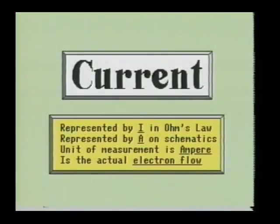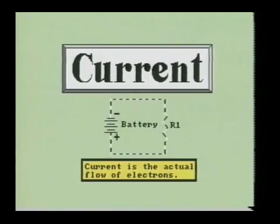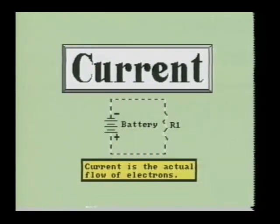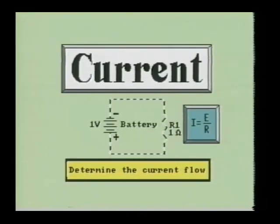The third variable we shall look at is current, represented by the letter I in the Ohm's Law equation. Current is measured in a unit called the ampere, or amp for short. Current is the actual electron flow through the circuit. It is the current which flows through the device which makes the device useful. Ohm's Law gives us the equation E over I times R. If we have a given voltage applied to a fixed resistance, we can calculate for the current by knowing the voltage and the resistance. For example, if we have a voltage of 1 volt applied to a resistance of 1 ohm, we will have 1 amp of current flowing through the device. This is calculated using I equals E over R: 1 volt divided by 1 ohm equals 1 amp of current.